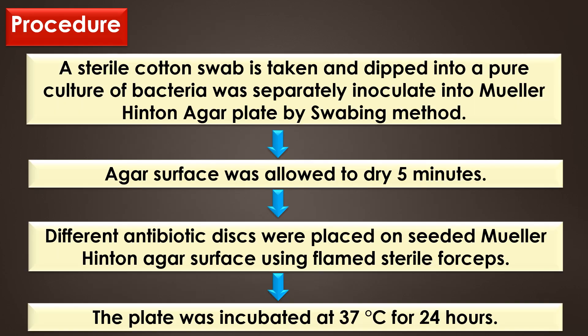A sterile cotton swab is taken and dipped into a pure culture of bacteria, then separately inoculated onto a Muller-Hindenagot plate by swabbing method — first in the horizontal direction and then in the vertical direction. The agar surface was allowed to dry for 5 minutes. After that, different antibiotic discs were placed on the seeded Muller-Hindenagot surface using flamed sterile forceps, and the plates were incubated at 37 degrees Celsius for 24 hours.